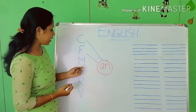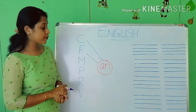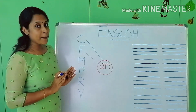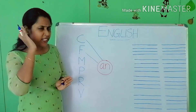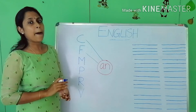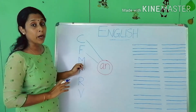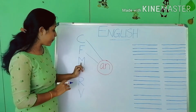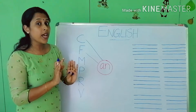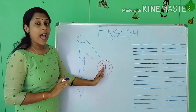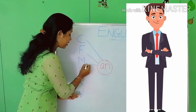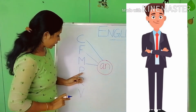Next, look at the next alphabet — it's M. What is the sound of M? M. Say it loudly. The sound of M is M. M and AN — 'man'. M and 'man'.